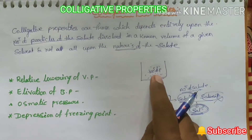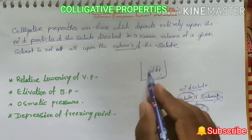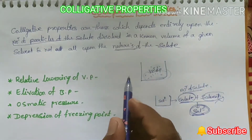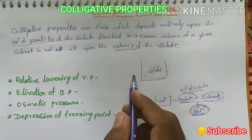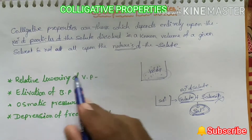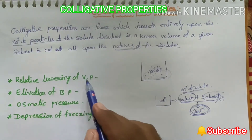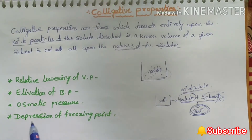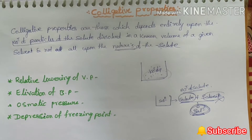Not on the nature of the solute, and also not the nature of the solvent. Therefore this property of the solution is called a colligative property. The applications of colligative properties help you find four things in your syllabus: relative lowering of vapor pressure, elevation of boiling point, osmotic pressure, and depression in freezing point. We will discuss and derive these one by one.